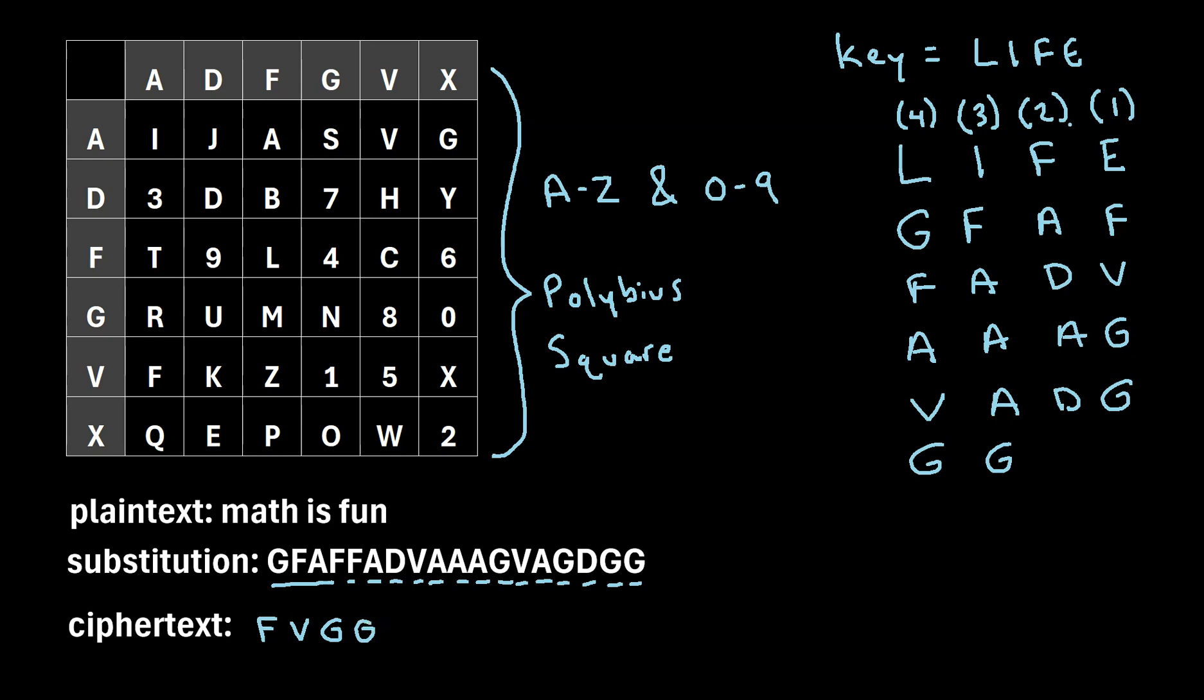Next, we need to identify column 2. So that's this column right here. We'll go ahead and write these letters next. A-D-A-D. Next, we'll move on to column 3, which is F-A-A-A-G. And then lastly, we'll do column 4, which is this column. So G-F-A-V-G. So this will be our final ciphertext. This is how we can encrypt the phrase math is fun using the ADF-GVX cipher.